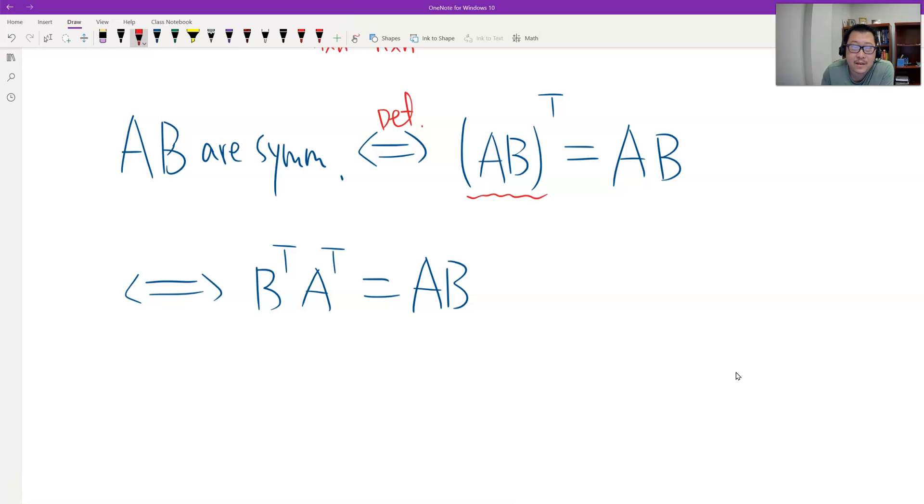Because here is the property. Here is the property of transpose. This is equal to this. The property of transpose is the theorem of 1.4.8.